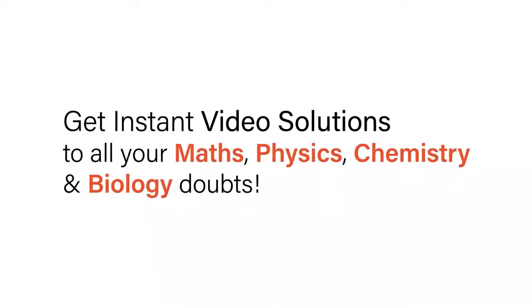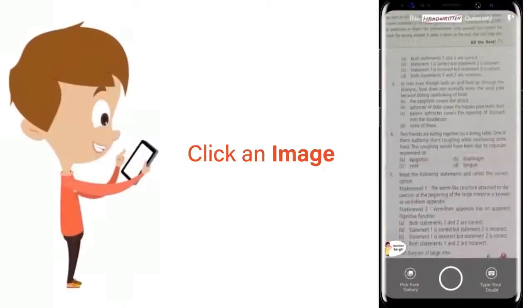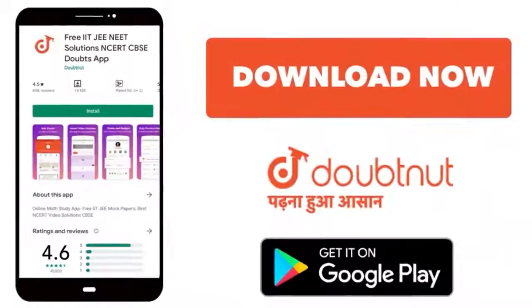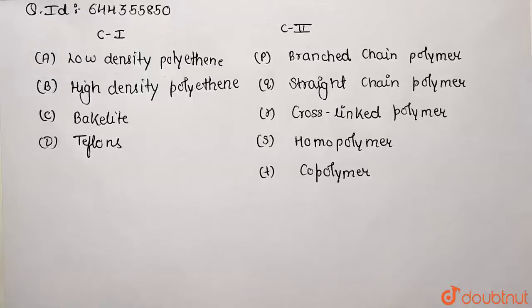With Doubtnut, get instant video solutions to all your maths, physics, chemistry, and biology doubts. Just click the image of the question, crop the question, and get instant video solution. Download Doubtnut app today. Hello students, in this question we are going to match the following with column one respective column two entries.